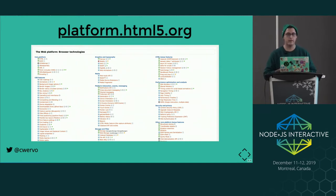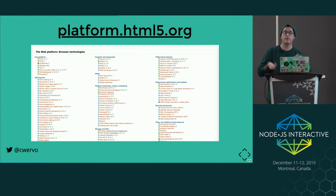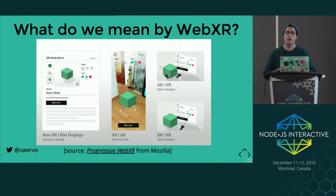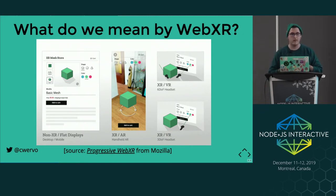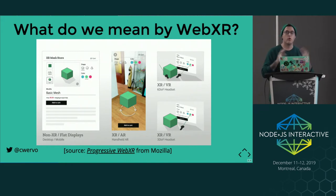Another way of looking at it is if you go to platform.html5.org, you see this giant checklist — rather overwhelming — of all the various specs that can possibly fit into a browser. But the thing that's important to remember about the concept of the web platform is that all these checkboxes are meant to enable users or developers to create new things or have new experiences. The breadth of XR is meant to cover everything from augmented reality to virtual reality to the normal 2D web that we've been programming for decades now.